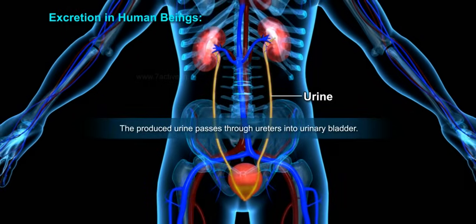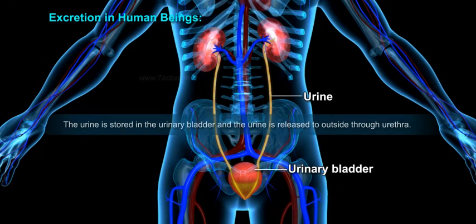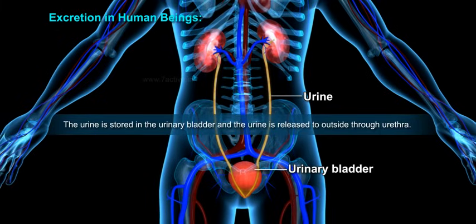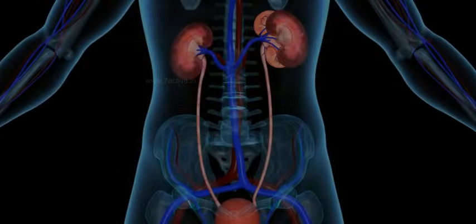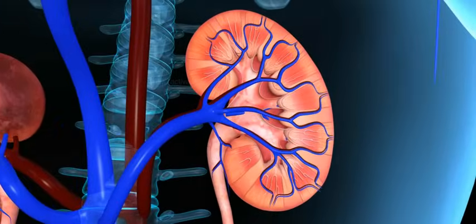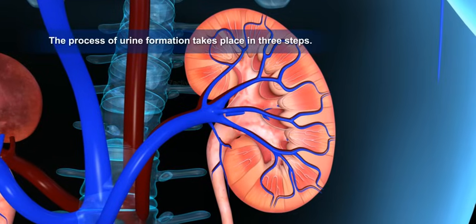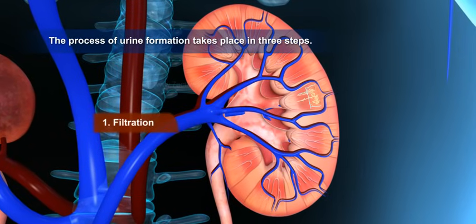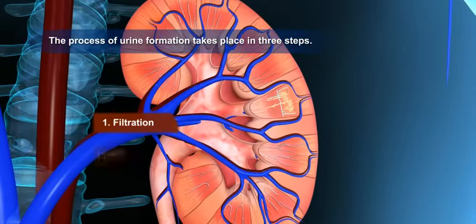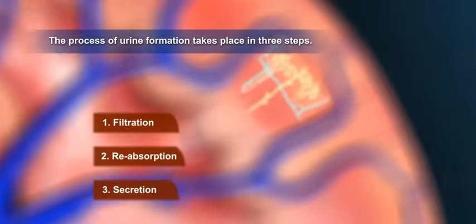The produced urine passes through the ureters into the urinary bladder, where it is stored and then released to the outside through the urethra. Urine formation takes place in three steps: one, filtration; two, reabsorption; three, secretion.